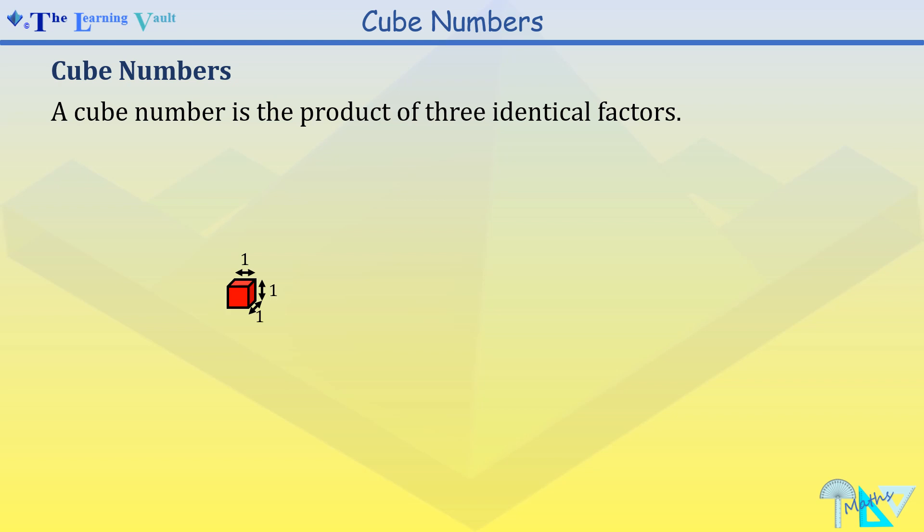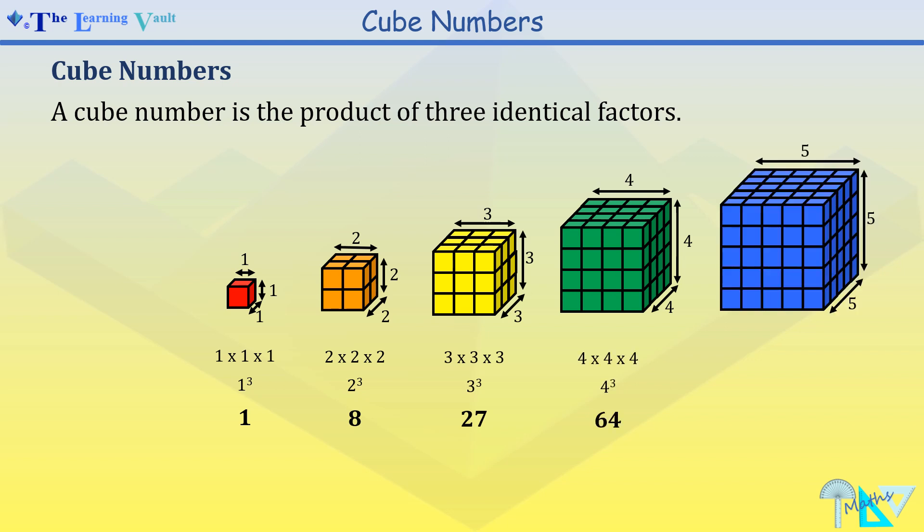We have that 1 times 1 times 1 is our first cube number and 2 times 2 times 2 is our second cube number, and we can see the rest of the first five cube numbers: 1, 8, 27, 64, and 125.